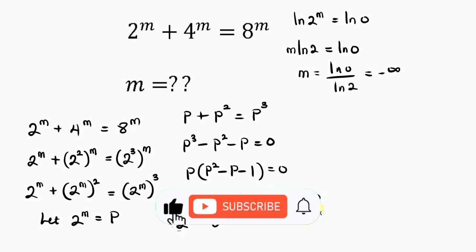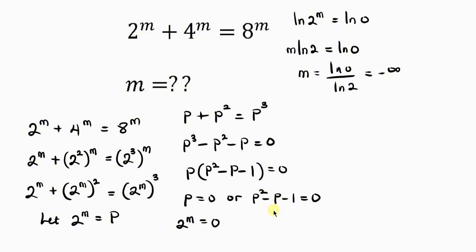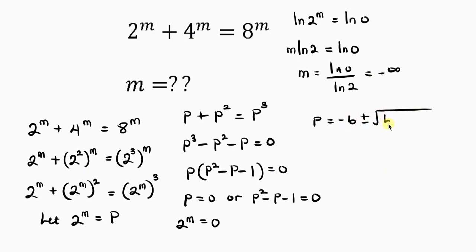Now let's focus on the other equation: p squared minus p minus 1 equals 0. We cannot factorize this, so we use the quadratic formula. p equals negative b plus or minus the square root of b squared minus 4ac, all divided by 2a.